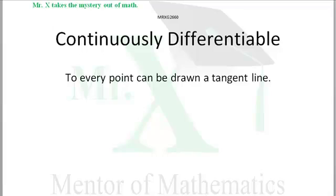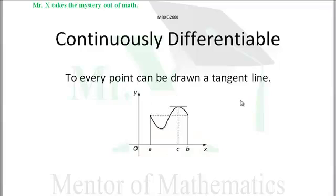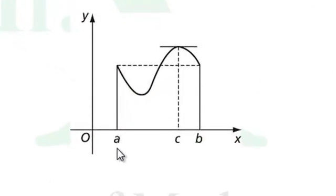If our function is continuously differentiable on some defined interval, say it's defined between a and b, if we can draw a tangent line everywhere to that graph, then it's continuously differentiable.